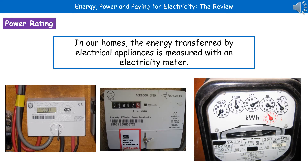When you're sitting at home with all of your electrical devices running, somewhere located on your property is an electricity meter. They come in all shapes and sizes these days, and you've now got the smart meters as well, which tell you exactly how much you're spending. But those electricity meters are actually measuring the energy being transferred by every electrical appliance in your house.